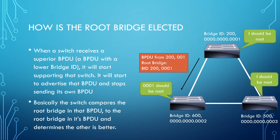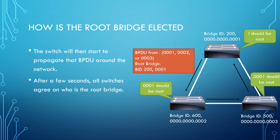Now 002 stops advertising itself as the root bridge and throws its support behind 001, propagating that BPDU to its neighbors — changing the sender bridge ID field to 600.002 but leaving the root bridge as 200.001. Switch 003 goes through the same process, sees that 200.001 has the lowest bridge ID and lowest bridge priority, and agrees it should be the root bridge. At the end of this election process all switches believe that 001 should be the root bridge because it has the lowest bridge priority and lowest bridge ID.